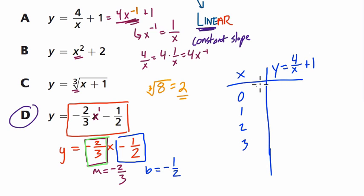So first of all, I plug in zero. Four divided by zero, that's undefined. So we can't even look at that. That makes me suspicious that this is not linear. But then if I plug in one, I get four divided by one plus one. So that's four plus one, which is five. Then I plug in two. Four divided by two plus one is two plus one, which is three.